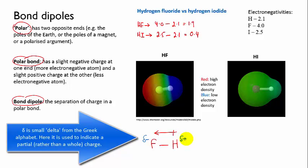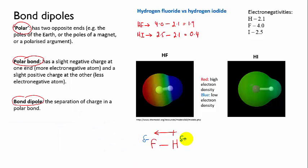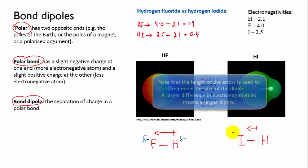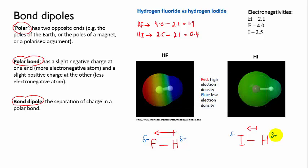We can also use a small delta plus and delta minus to indicate the partial charges. The delta's in particular meant to indicate that we're not talking about ions here. It's not a complete charge. And if we do the same thing for hydrogen iodide, we draw the arrow to indicate the bond dipole, and we draw in our partial charges.